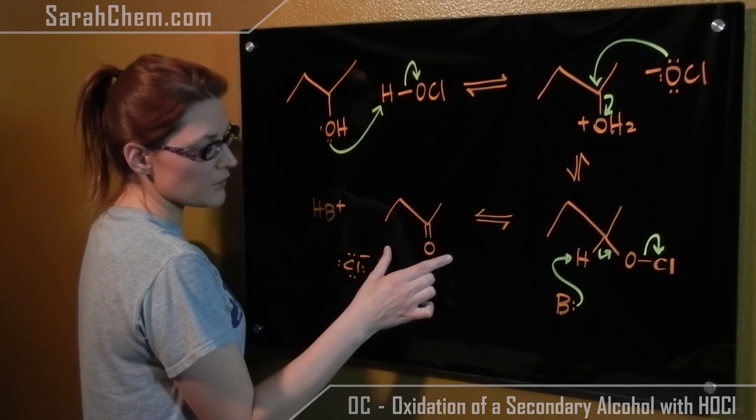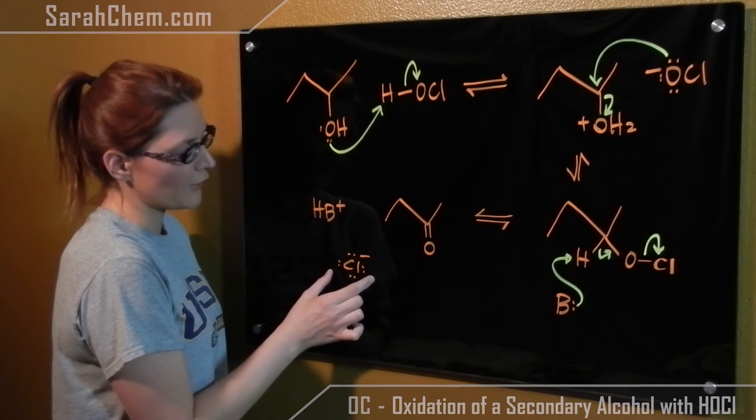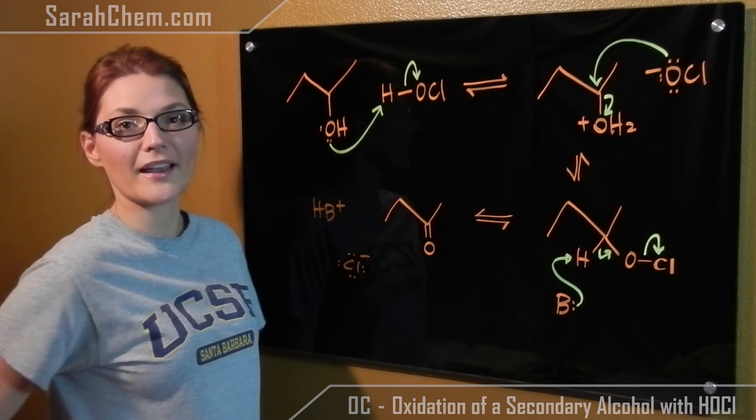So at the end we formed our ketone, a protonated base, and our chloride anion. And that's what that mechanism looks like.